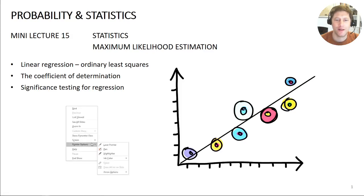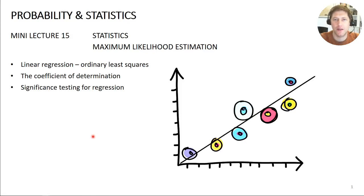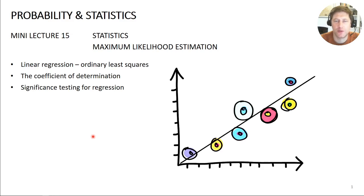Welcome to lecture 15. This is going to look at the maximum likelihood estimation method — how do we decide what's the best fitting model for a set of data? You can select the sort of model you want to use, but how can we pick the best parameters? The parameters which give the maximum likelihood of representing the data. We're going to look at the coefficient of determination, and then do a significance test on that to decide whether or not it is a good enough model for the data.